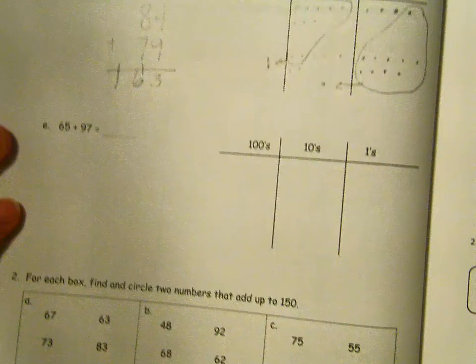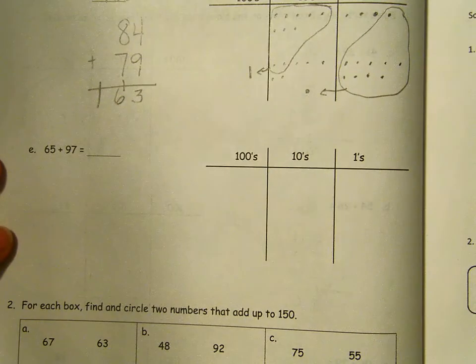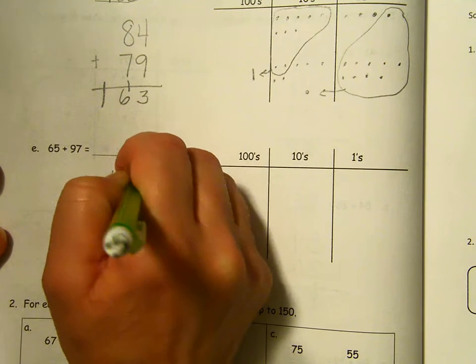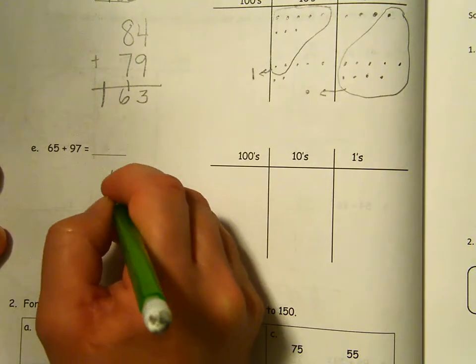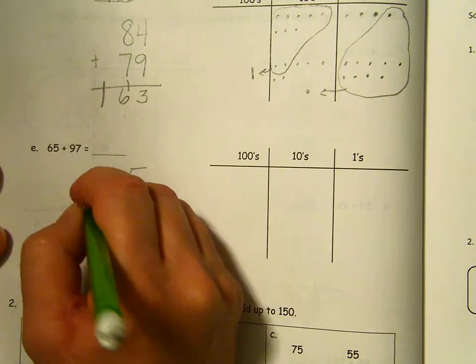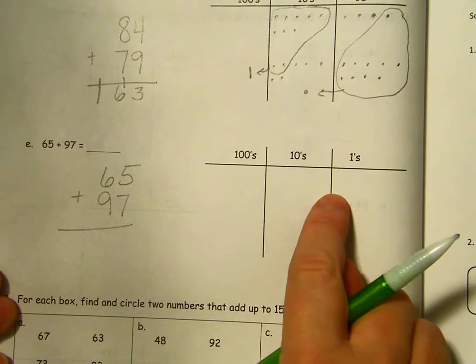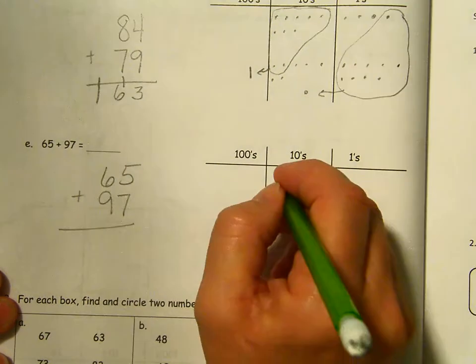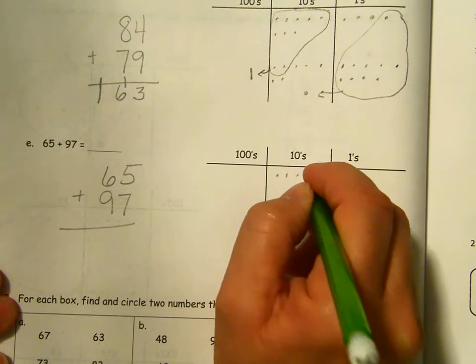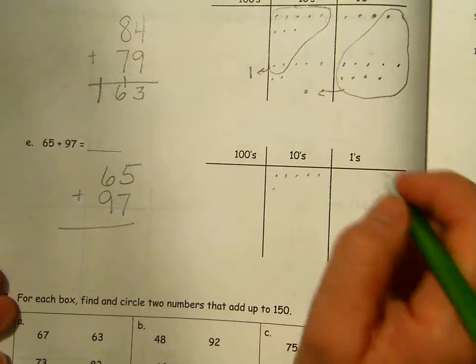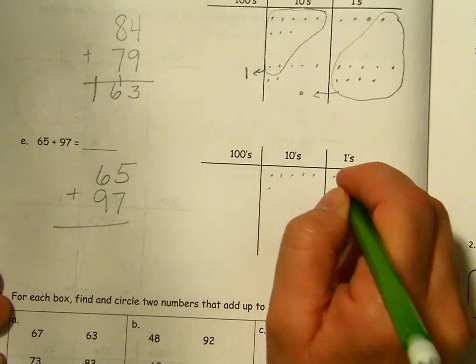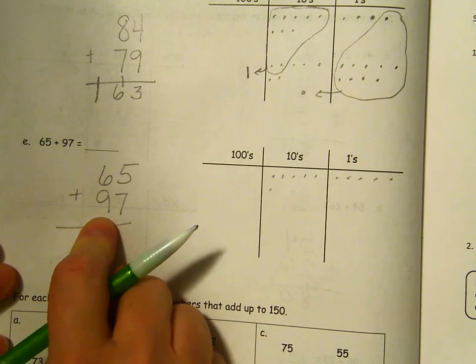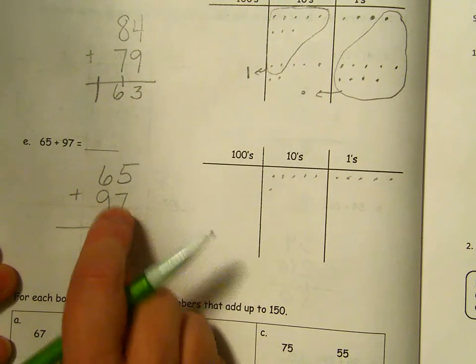One more of this kind. 65 plus 97, writing it vertically. 65, 97. And we're going to draw them. Six tens, five ones.